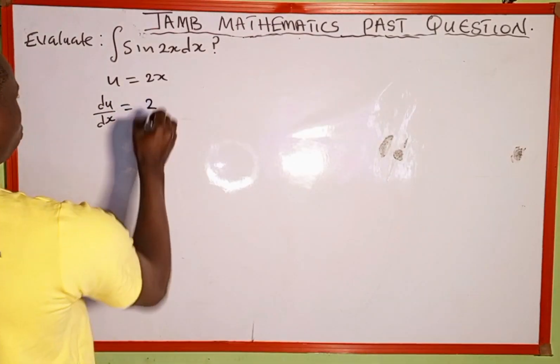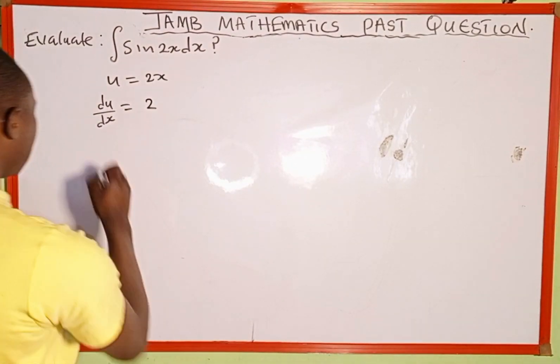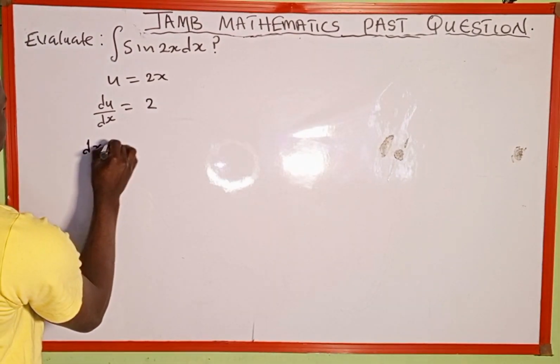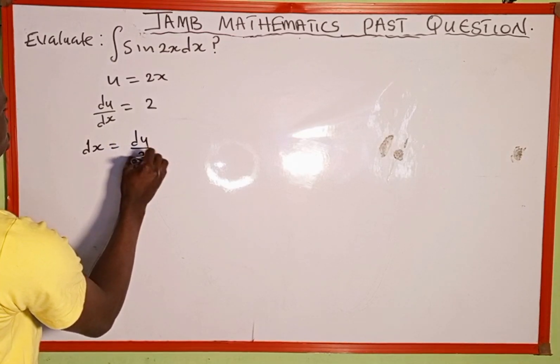This is going to be 2. Now we're going to make dx the subject of the formula, so dx will be equal to du over 2.